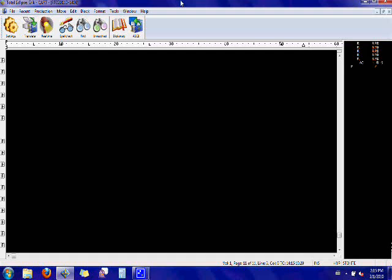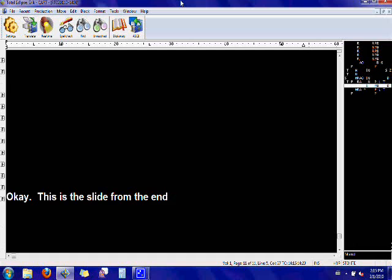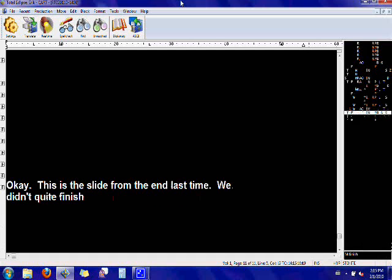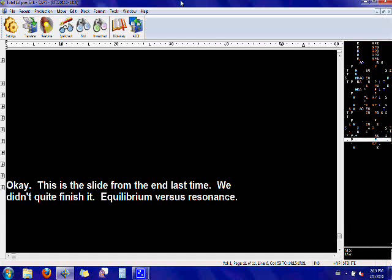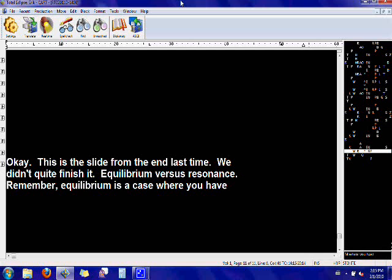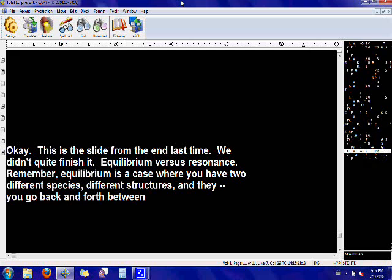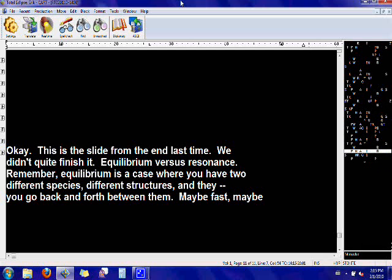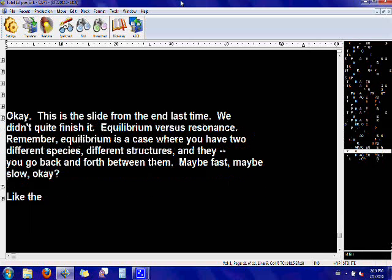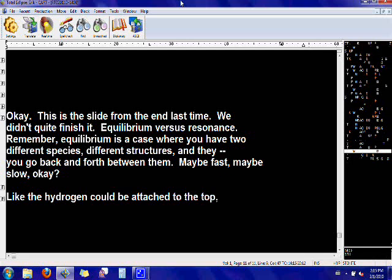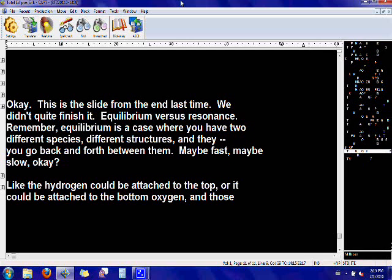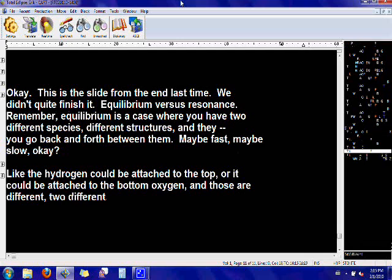OK. This is the slide from the end last time. We didn't quite finish it. Equilibrium versus resonance. Remember, equilibrium is a case where you have two different species, different structures, and you go back and forth between them, maybe fast, maybe slow. Like the hydrogen could be attached to the top, or it could be attached to the bottom oxygen, and those are different, two different what's called isomers. We'll get to that later on.